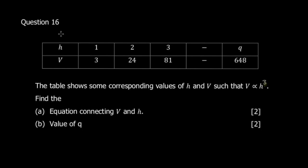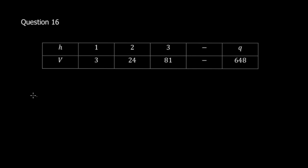Let's do question 16. The table shows corresponding values of h and v such that v is directly proportional to h cubed. The first part says find the equation connecting v and h. So we have v directly proportional to h cubed, and when we get rid of the proportionality sign we introduce a constant.